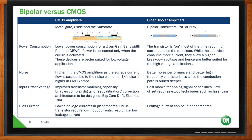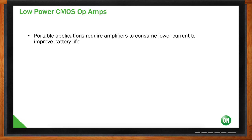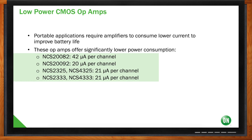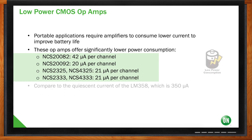On the power topic — if my application is power constrained, what do I need to think about? If you're trying to improve battery life, it would be the quiescent current. For example, the NCS20082 and NCS20092 are at 42 microamps per channel. That's a really significant improvement compared to the traditional bipolar LM358 at 350 microamps for the same gain bandwidth.